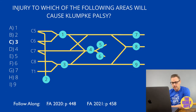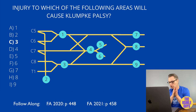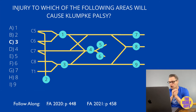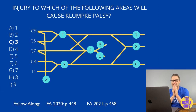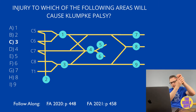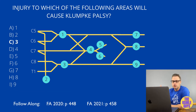Klumpke's palsy results in claw hand and occurs from traction or tearing of the lower trunk, the C8 to T1 roots. In infants, watch for an upward force applied to the arm during delivery. In adults, forceful upward traction is also a cause — for example, grabbing a branch while falling from a tree and forcing the arm upward. This injury affects the intrinsic muscles of the hand, resulting in the characteristic claw hand.